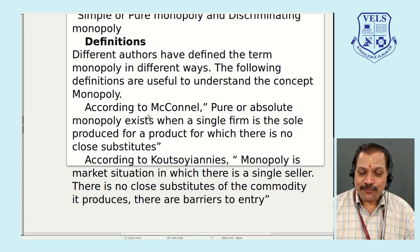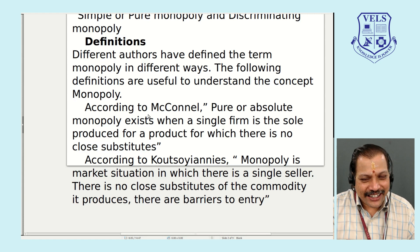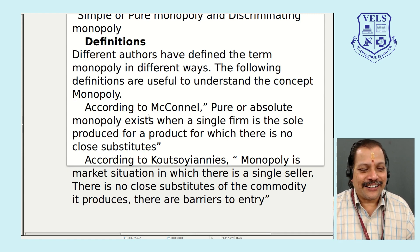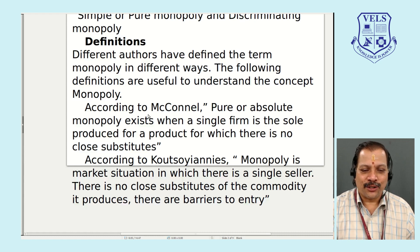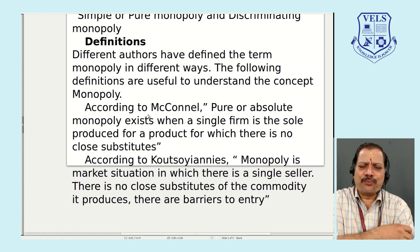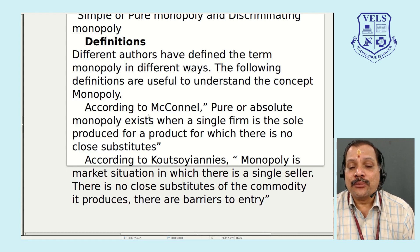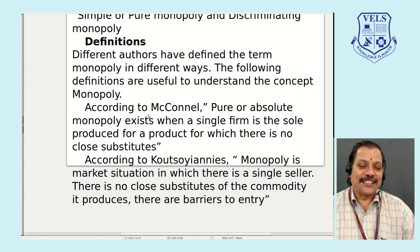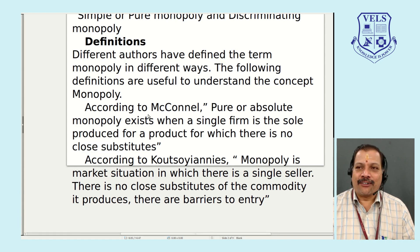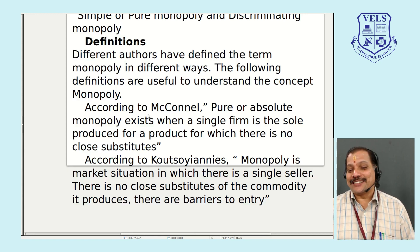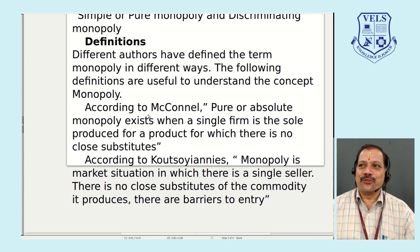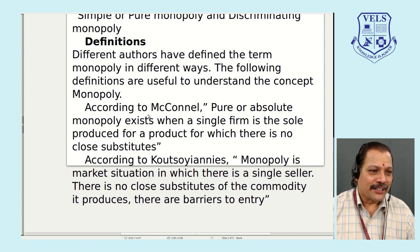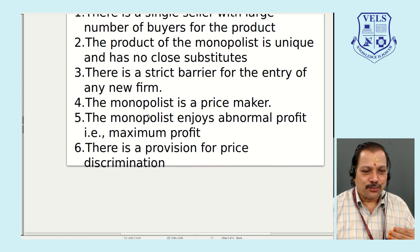Both Magnell and Koshianis commonly state: one, a single firm, and two, no substitutes. But Koshianis further adds that there is a barrier to entry — anybody cannot enter the market. When you answer a question on defining monopoly, first write one introductory sentence, then write the definition by Magnell and the definition by Koshianis — including the barrier to entry point — to score full marks.